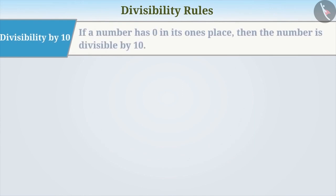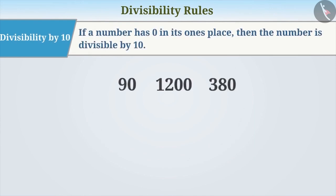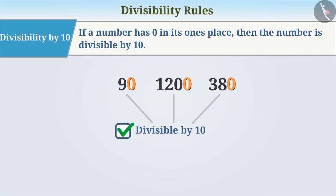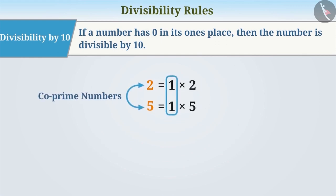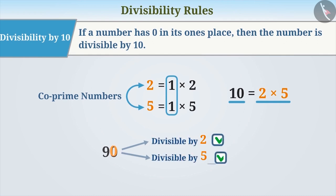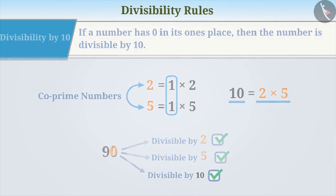Divisibility by 10: If a number has 0 in its ones place, then the number is divisible by 10. You can understand this in another way. The co-prime numbers 2 and 5 are factors of 10. If the last digit of a number is 0, then the number is divisible by both 2 and 5. Therefore, that number is also divisible by the product of those two numbers, which is 10.